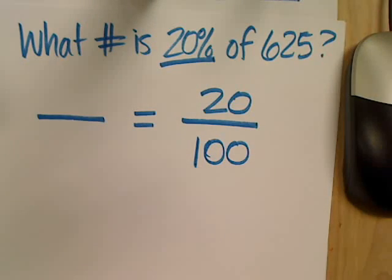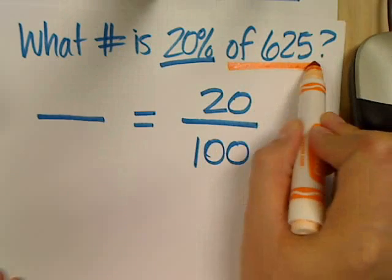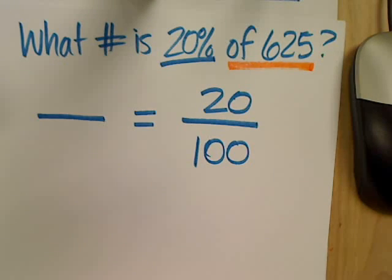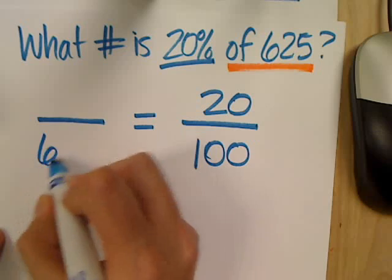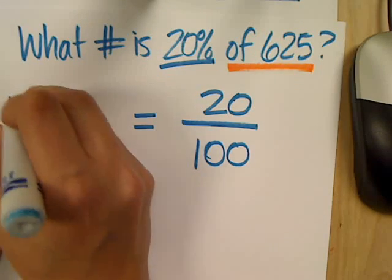Then I look at my question again, and it says, what number is 20% of 625? So, because it says of in front of it, that tells me it needs to go top or bottom? On the bottom. Because remember, it's is over of.